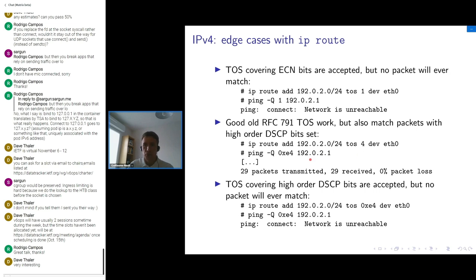Something that might surprise some users is that this route will also match packets with TOS 0x1E4, because the high-order DSCP bits of 0x1E4 will be masked by the IPv4 routing code. So we can match packets with TOS 0x1E4 by using just TOS 4. But if we try to explicitly match TOS 0x1E4, we won't match it at all, again because of the mask applied before routing IPv4 packets.